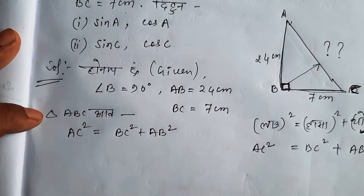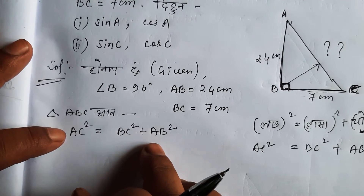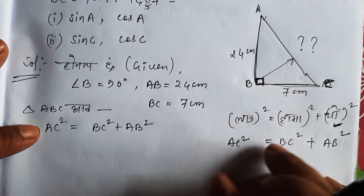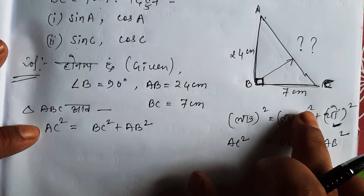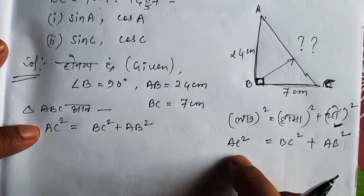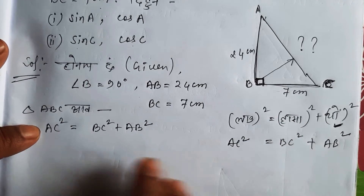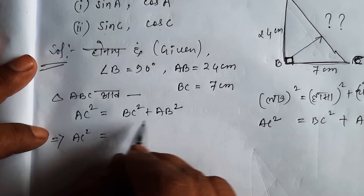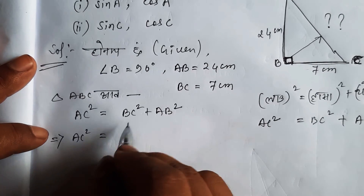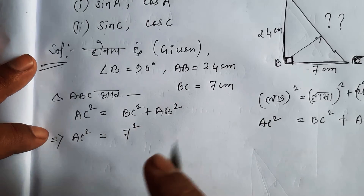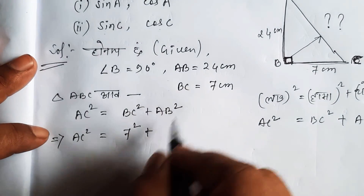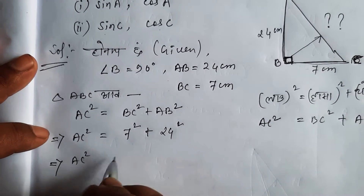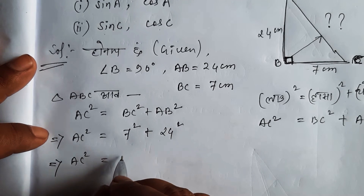This triangle is ABC. So AC squared equals BC squared plus AB squared. AB squared is 24 squared. BC squared is 7 squared. 7 into 7 is 49.